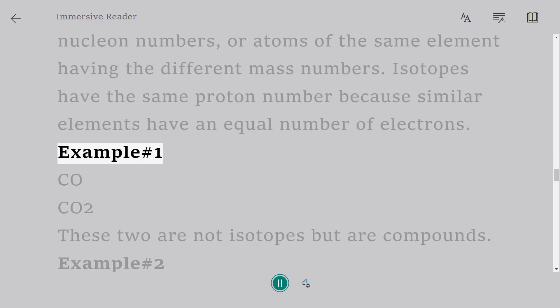Example number 1: CO, CO2. These two are not isotopes but are compounds.